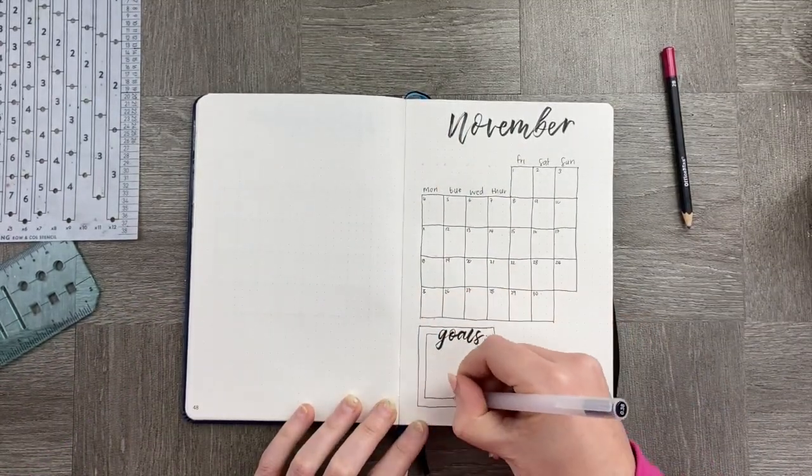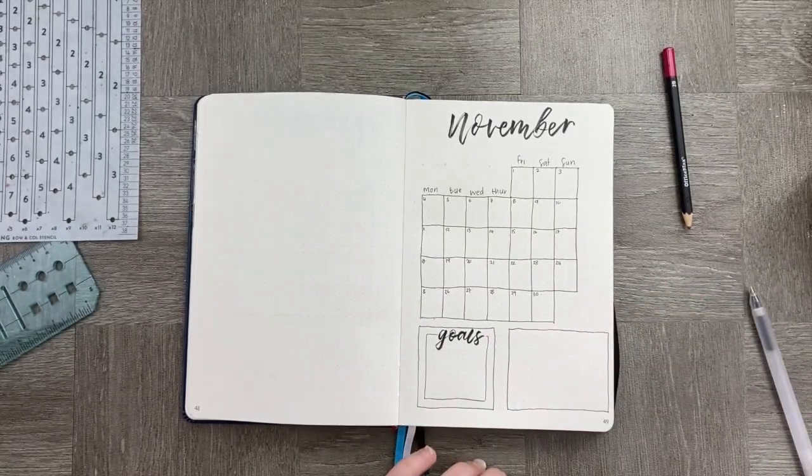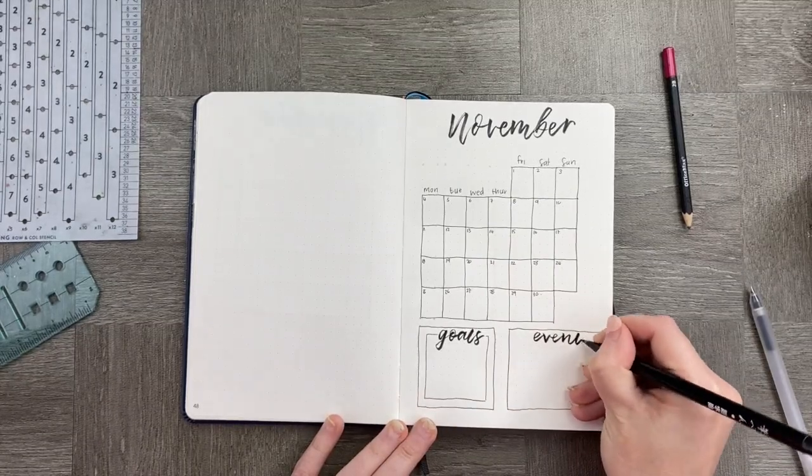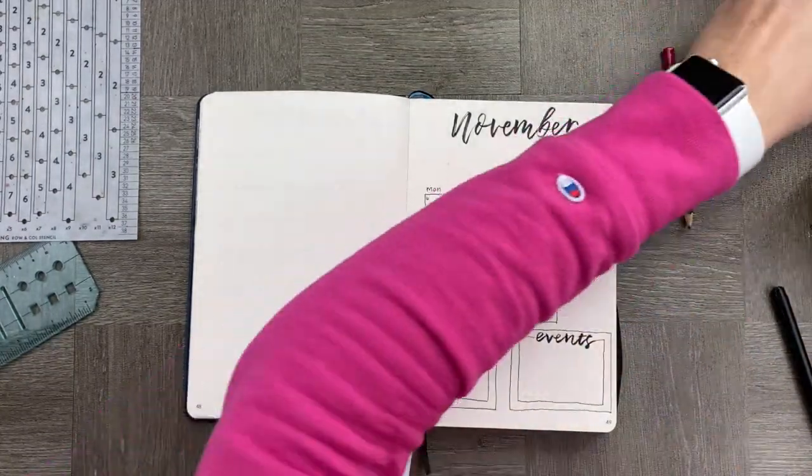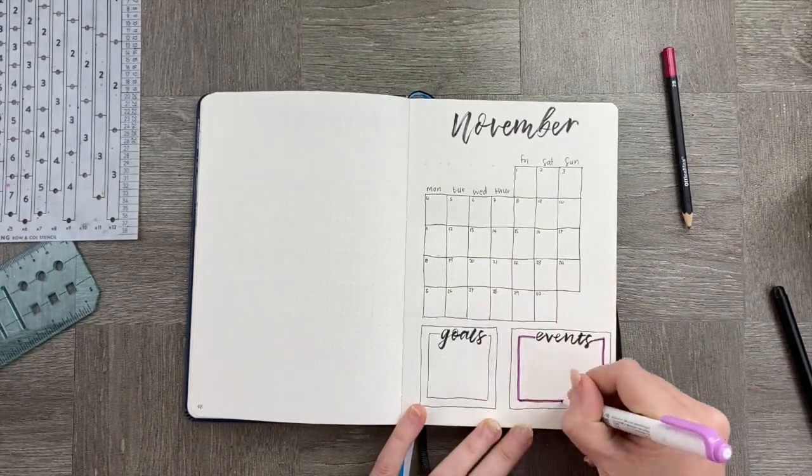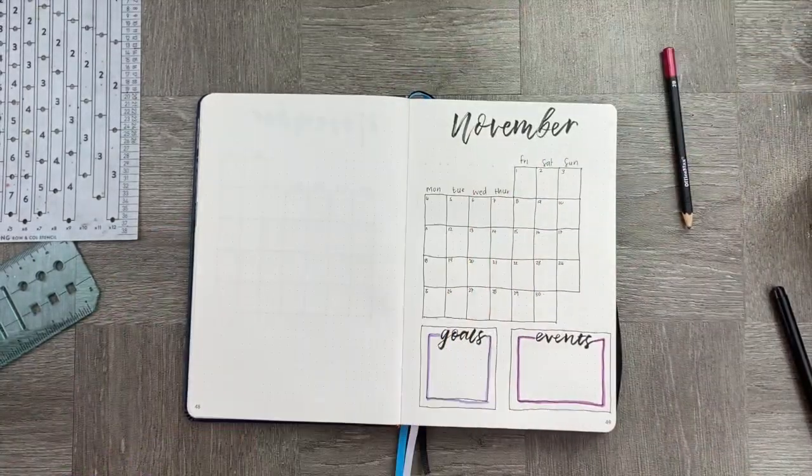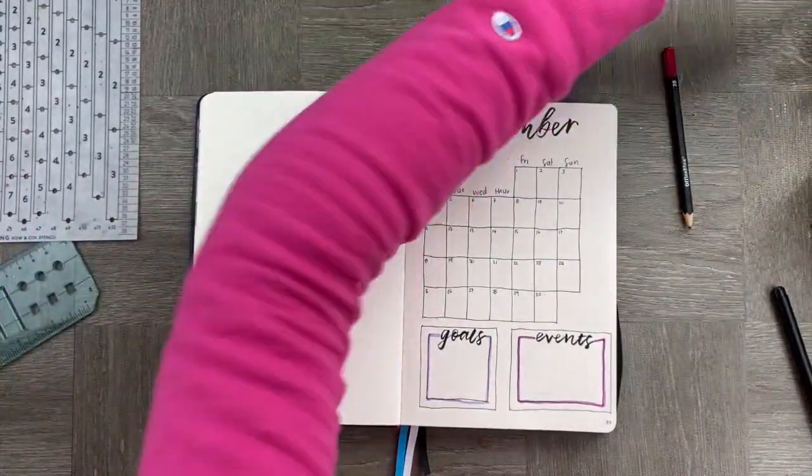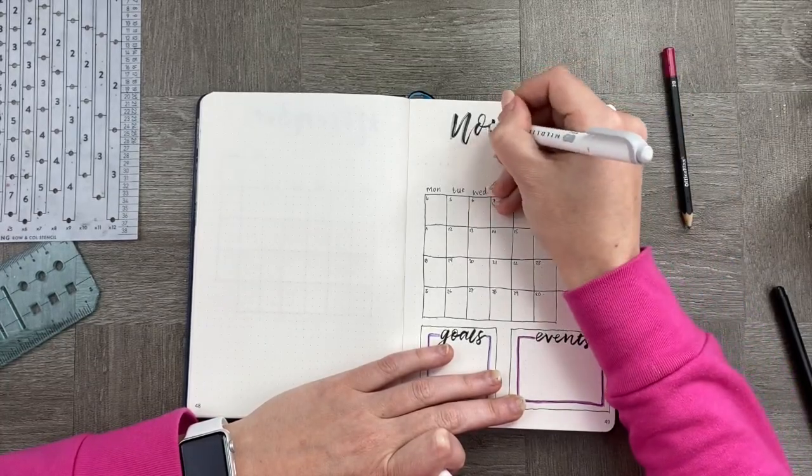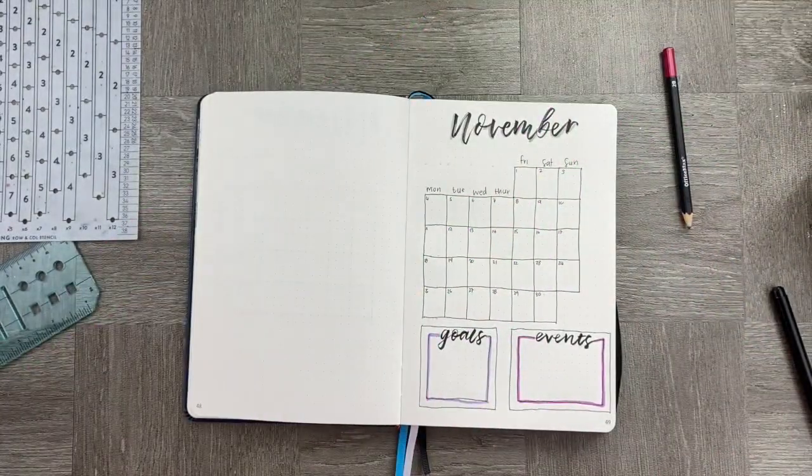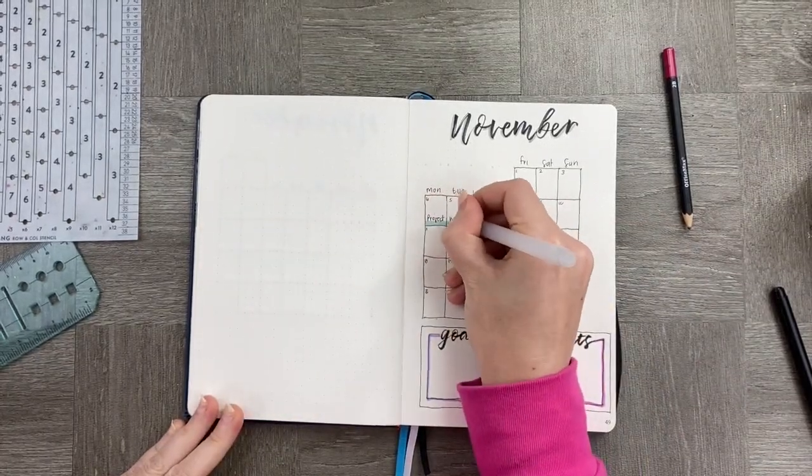What I wanted to do this month is just add a couple of goals, and I also wanted to add some events in. Again, not using a ruler, just using my free hand. I'm going to kind of embellish it a little bit with a highlighter just to make it look a little bit more juicy than black and white.